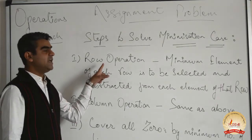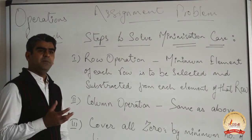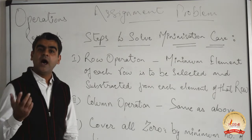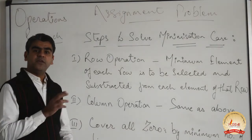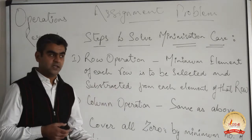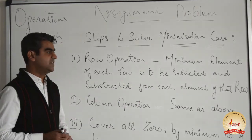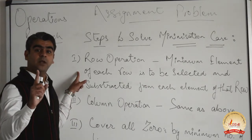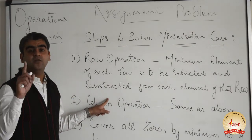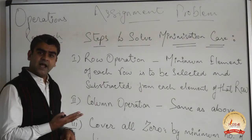In step number 1, called the row operation, we need to find the minimum element of each row. We may have a matrix of order 3×3 or 4×4 or higher. The minimum element in each row is to be selected and subtracted from each element of that particular row. For example, if you select the minimum element from row number 1, that element needs to be subtracted from all elements of row number 1.